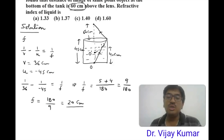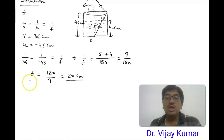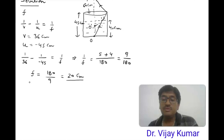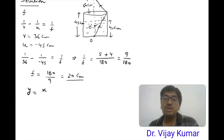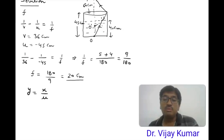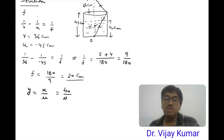When liquid is filled up to 40 centimeters, the object appears to be raised due to refraction. The apparent position O-dash is at a depth y, where y = x/μ. Here x is 40 centimeters — the height of the liquid — so y = 40/μ.